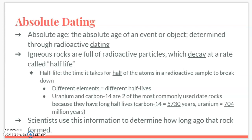That is the end of our understanding geologic history notes. You'll need all of this information for your assignments this week. The only assignment with absolute dating and radioactive dating is the rock detective worksheet — the last two questions are related to the half-life of carbon-14, the 5,730 years. If you're confused, post under the assignment on Google Classroom, email me, or send a Remind message and I'd be happy to help.